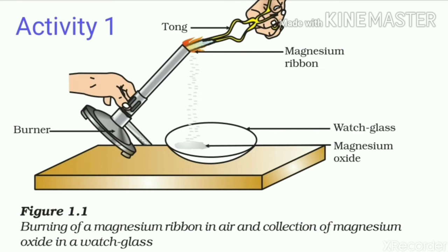In Activity 1, we will burn a magnesium ribbon in air. This activity needs the teacher's assistance. It would be better if students wear eye protection. First, clean a magnesium ribbon about 2 cm long by rubbing it with sandpaper. Now, hold it with a pair of tongs and burn it using a spirit lamp or burner, and collect the ash so formed in a watch glass as shown in the figure. We should burn the magnesium ribbon keeping it as far as possible from our eyes.